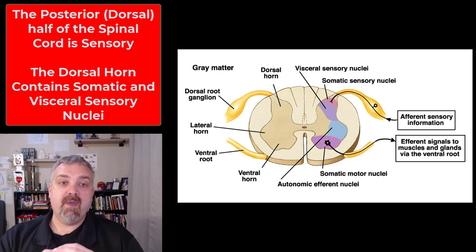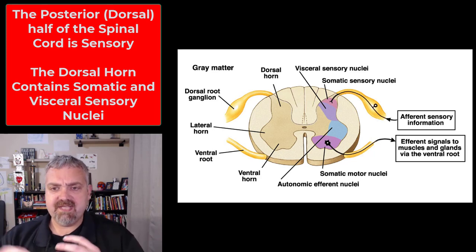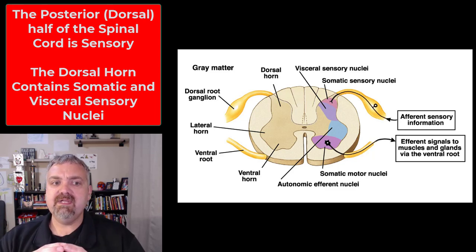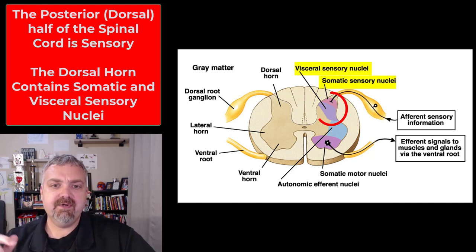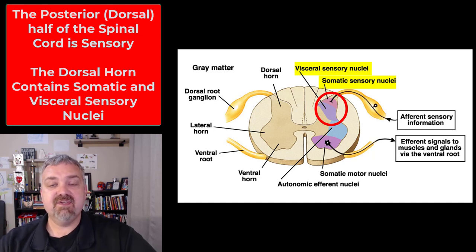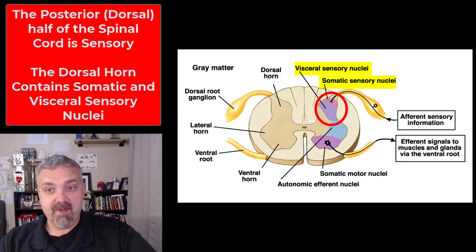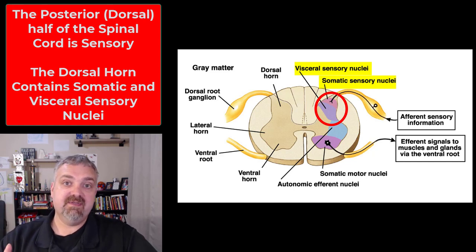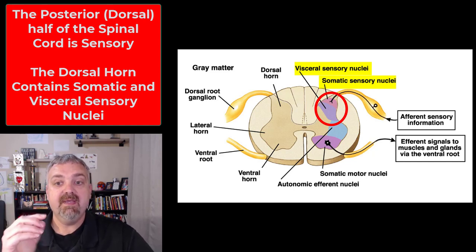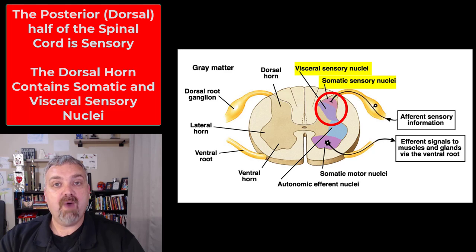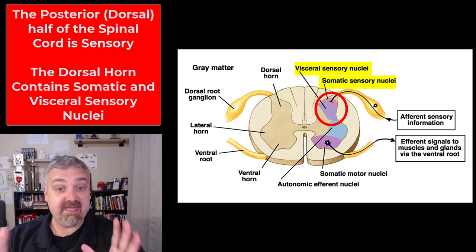Here's a little more specifically what's going on. Cell bodies and their supportive cells are grouped together in what are called nuclei. The posterior gray horn of the spinal cord is going to be where you have somatic and visceral sensory nuclei. So somatic sensory information and visceral sensory information are going to travel to the posterior horn of the spinal cord, and that information is going to travel up the dorsal or posterior half of the white matter of the spinal cord to reach the brain if needed.